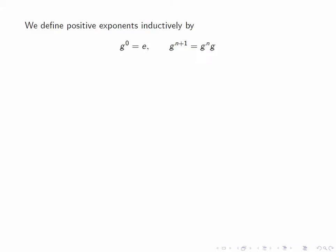Then for negative exponents, we can define g to the minus n for a positive integer n to be the inverse, g inverse, raised to the power n.